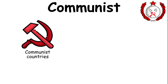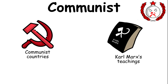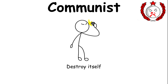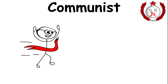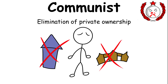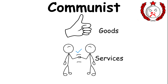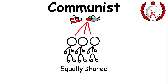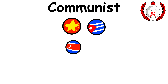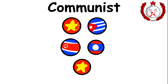Communist countries believe in Karl Marx's teachings that a capitalist form of government would eventually destroy itself. As a result, the goal of communism is to achieve a classless society through the elimination of private ownership of property, so that all goods and services within the state are equally shared by the people. There are currently five countries that practice communism in today's modern world, namely China, Cuba, Laos,